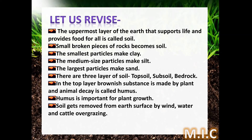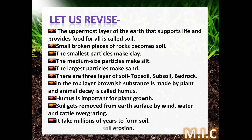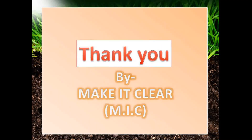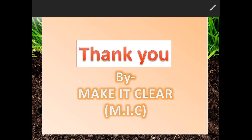Soil gets removed from the earth's surface by wind, water, and cattle overgrazing. It takes millions of years to form soil. Plant more trees to prevent soil erosion.